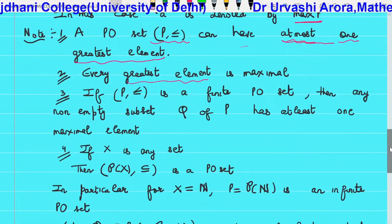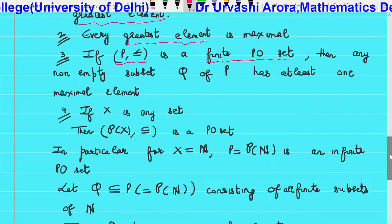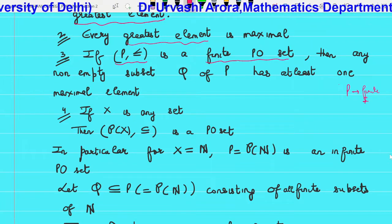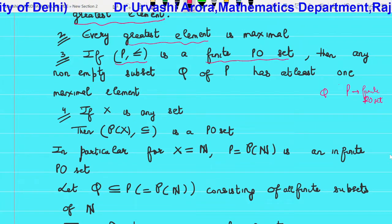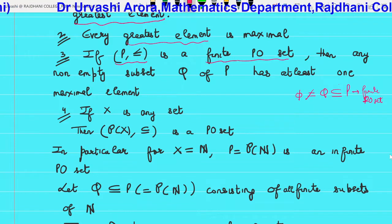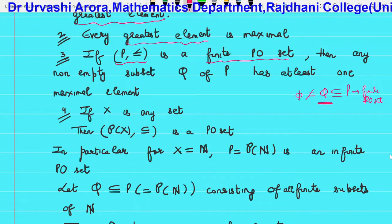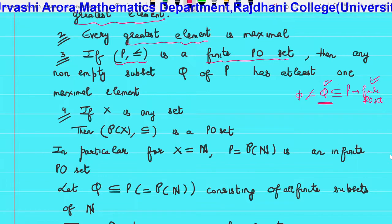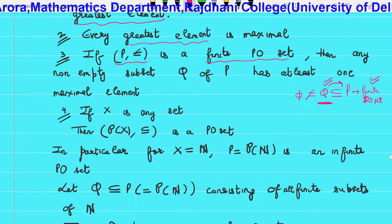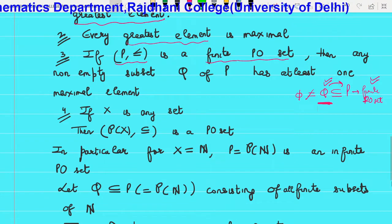Third note: if (P, ≤) is a PO set which is finite, and Q is a non-empty subset of it, then the result states that Q will have at least one maximal element. So for a finite PO set, any non-empty subset always has at least one maximal element.